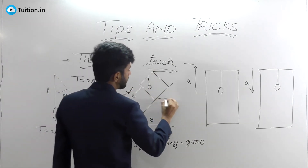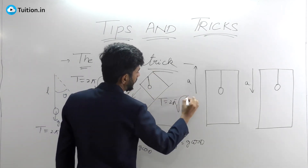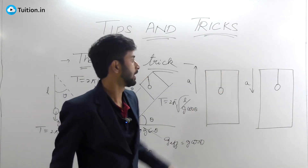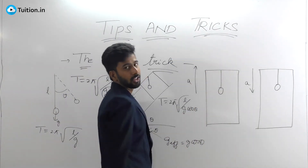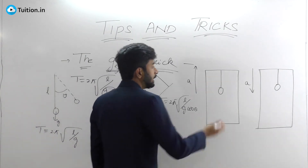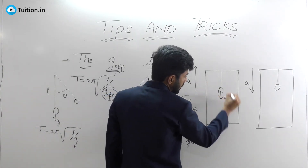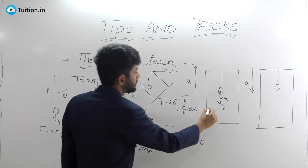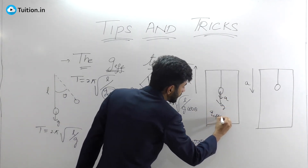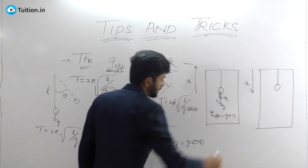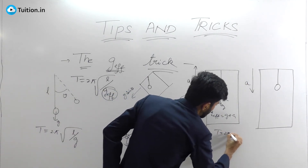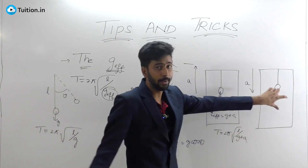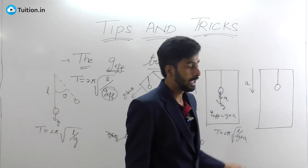So the time period in that case is T = 2π√(l / g cos θ). Now let's look at a lift moving upward with acceleration a. Going into the lift's frame, you apply a pseudo acceleration a downward. Since g was already present downward, your g-effective here is g + a downward, and your time period is T = 2π√(l / (g + a)).